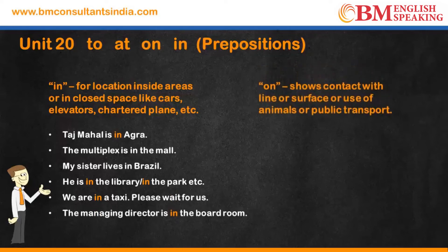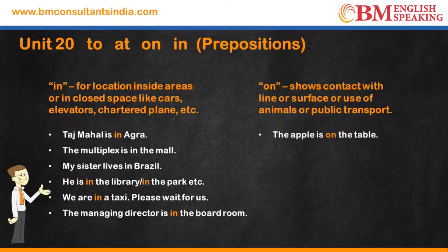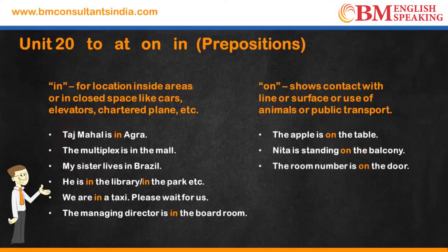'On' is used when showing contact with a line or surface, or the use of animals or public transport. The apple is on the table — apple table ke upar hai. Neetha is standing on the balcony. The room number is on the door.